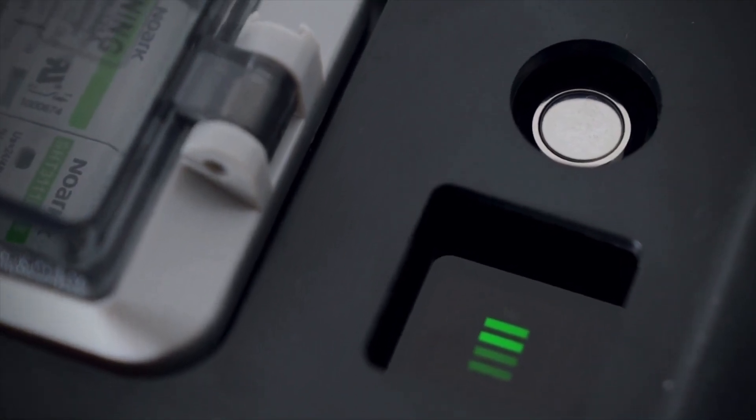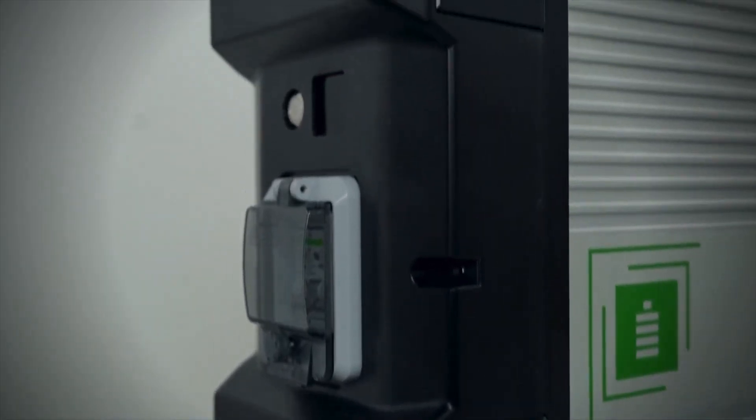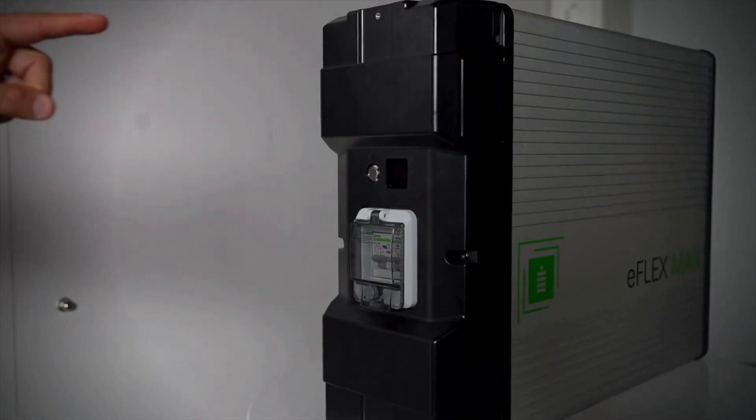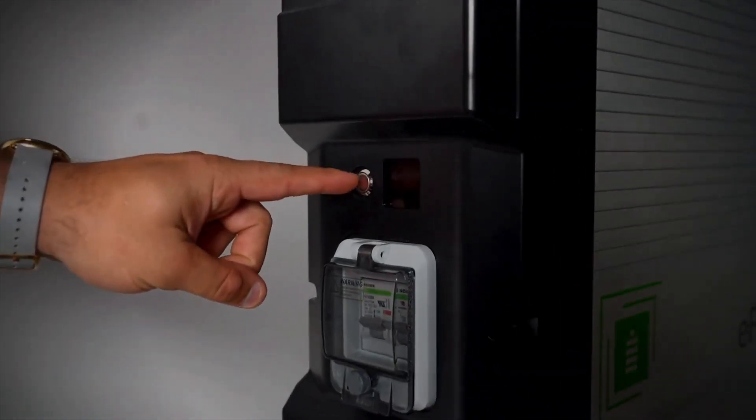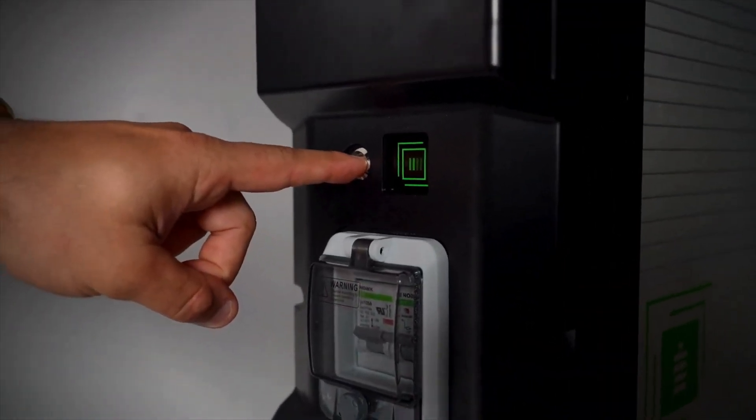Now what really sets the eFlex Max apart is its rugged, saltwater-resistant aluminum enclosure. This thing is built to handle just about anything, indoors or out, without needing extra layers of protection.